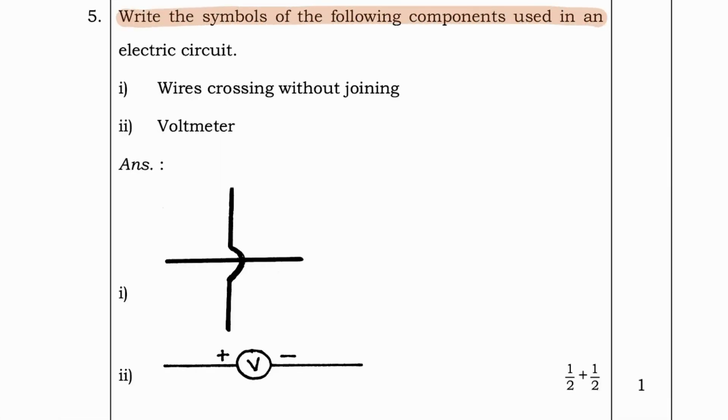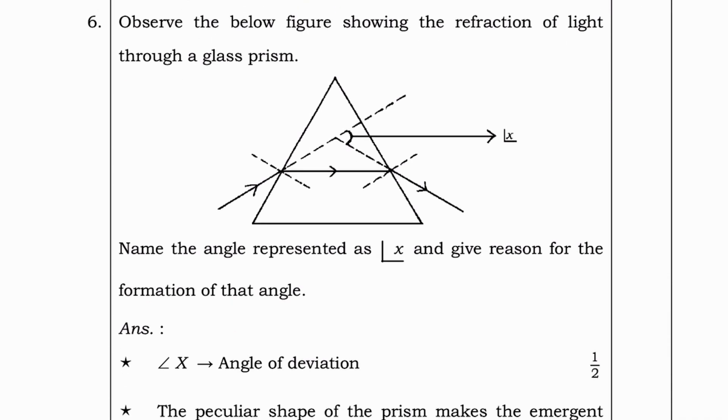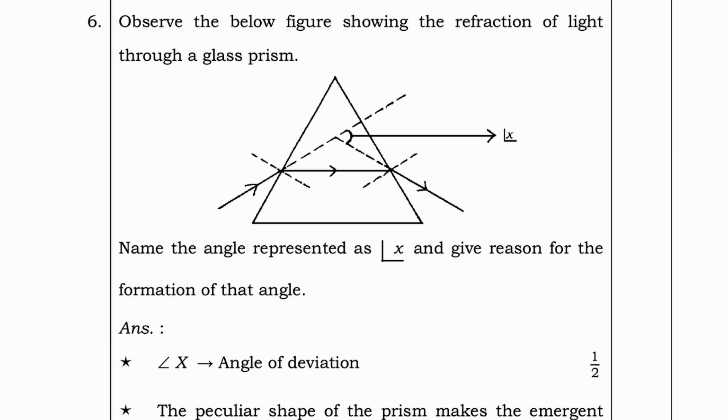Now let's go to next question. Write the symbols of the following components used in an electric circuit. Wires crossing without joining, and voltmeter. These are the symbols. Please do check symbols before your exam because the question asking symbols is guaranteed for your exam.